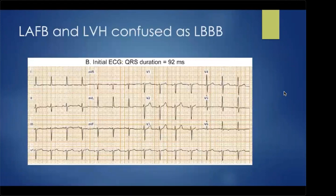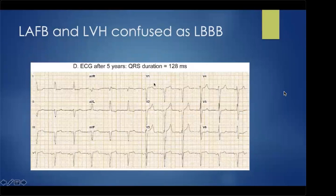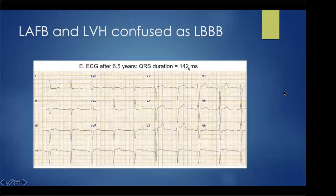There are many mimickers of LBBB that meet traditional criteria but not Strauss criteria. An example is a patient with left anterior fascicular block and LBHB whose QRS widens over time. After five years, the ECG meets traditional criteria with QRS over 128 milliseconds — but there is no notching. According to strict criteria, this wouldn't qualify. Even when the QRS eventually reaches 142 milliseconds, there is still no notching. This is a left bundle mimic, not true LBBB.